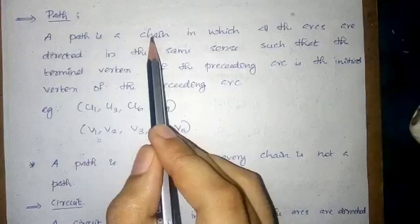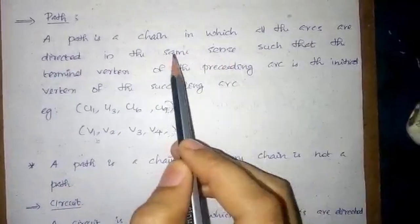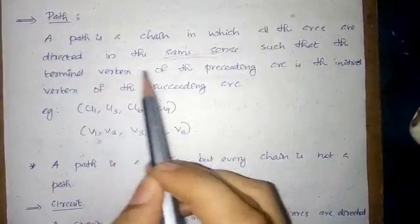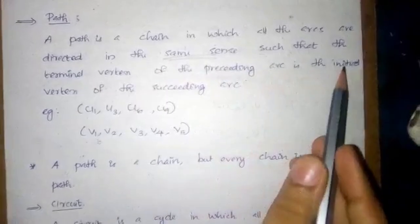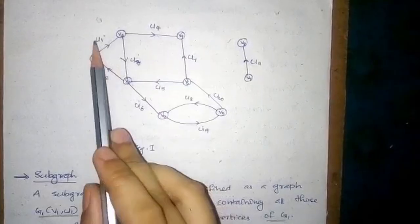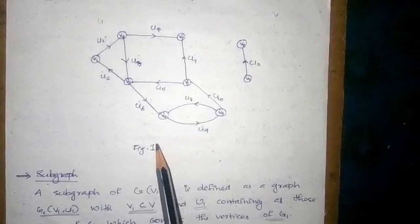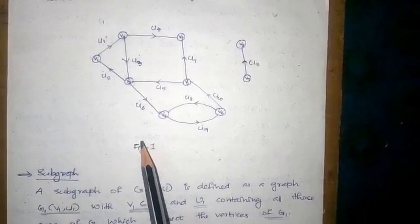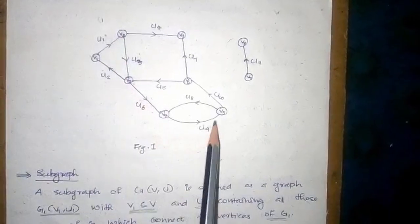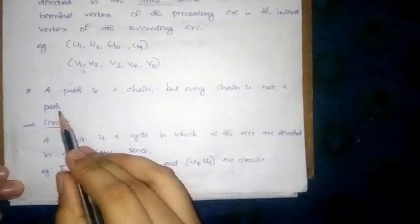Path. A path is a chain in which all the arcs are directed in the same sense — that is, the same direction — such that the terminal vertex of the preceding arc is the initial vertex of the succeeding arc. For example, the sequence U1, U3, U6, U9 is an example of a path. It may also be denoted as V1, V2, V3, V4, V5. A path is a chain, but every chain is not a path.